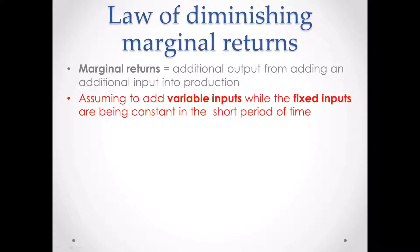We have to assume one thing. When we are talking about the law of diminishing marginal returns, we have to make some assumptions. This is the assumption we always have to bear in mind — when we are trying to make more output, we are only adding some variable inputs while the fixed inputs remain constant.